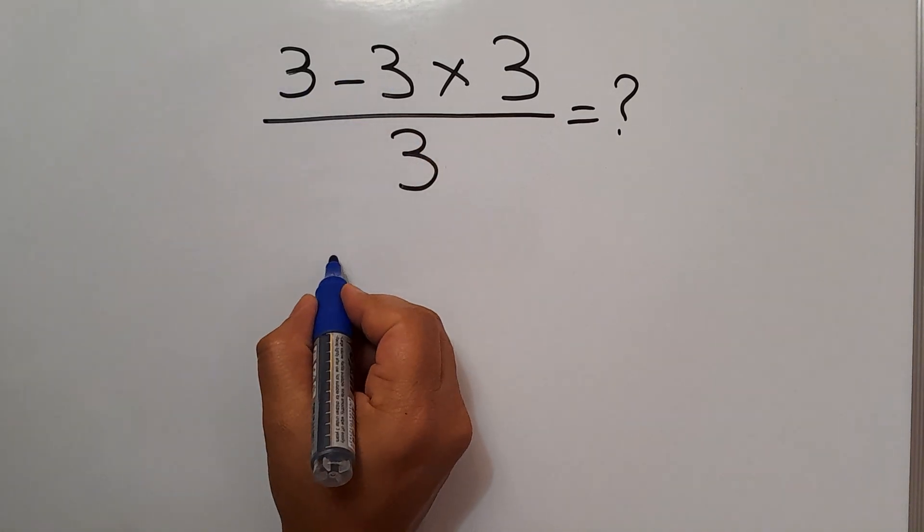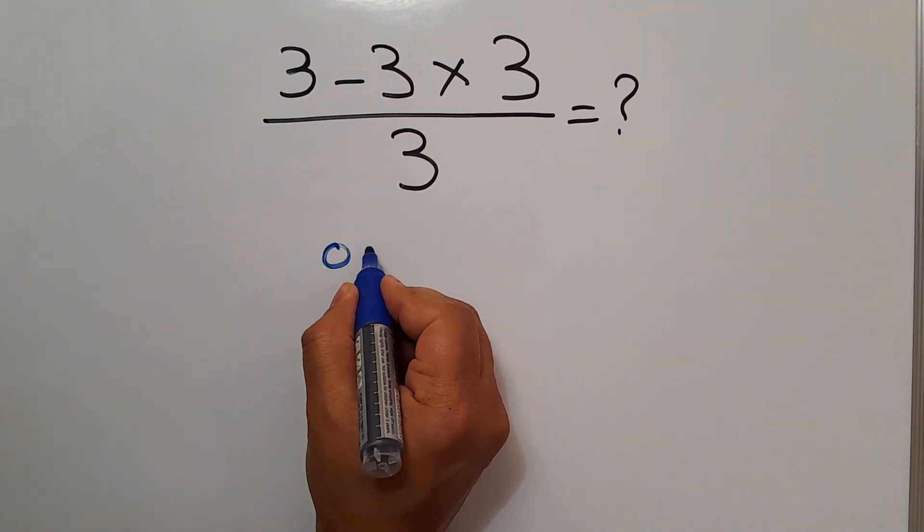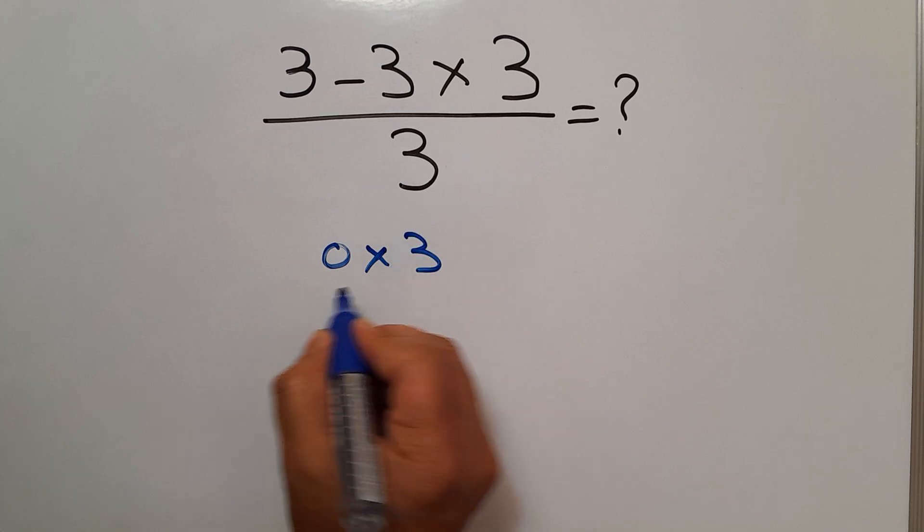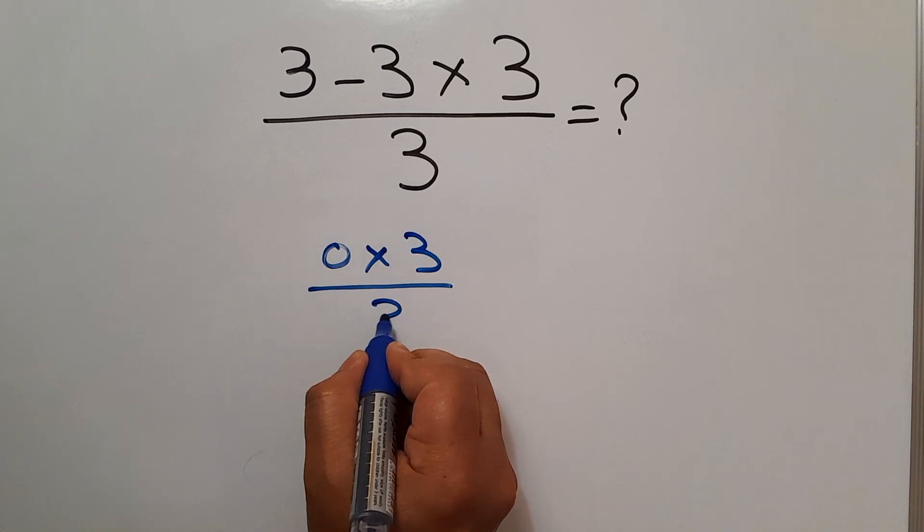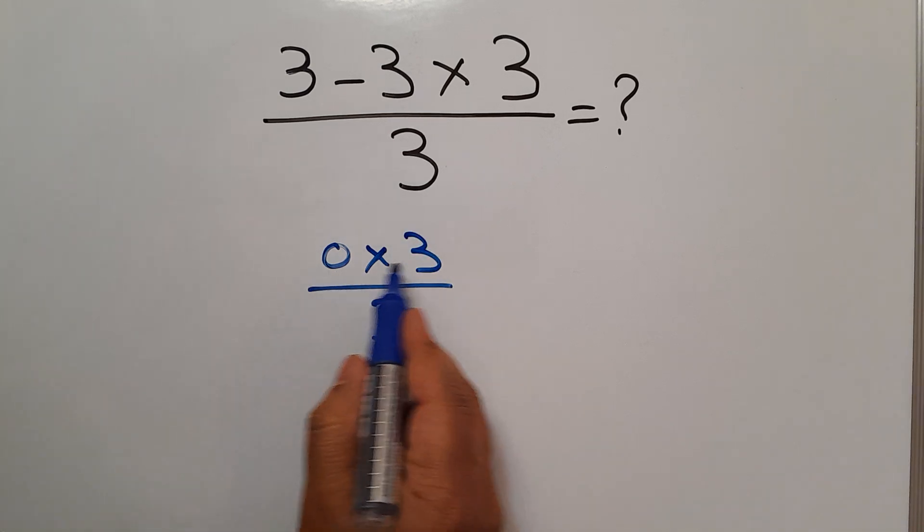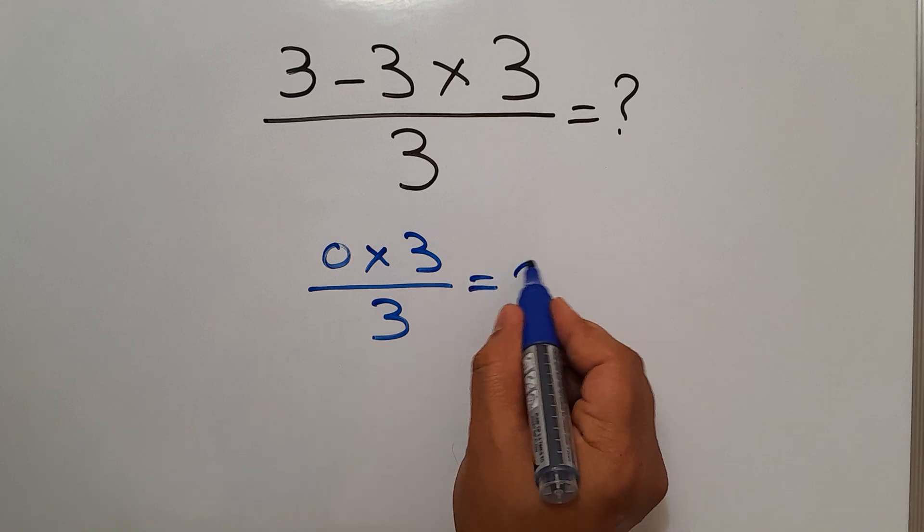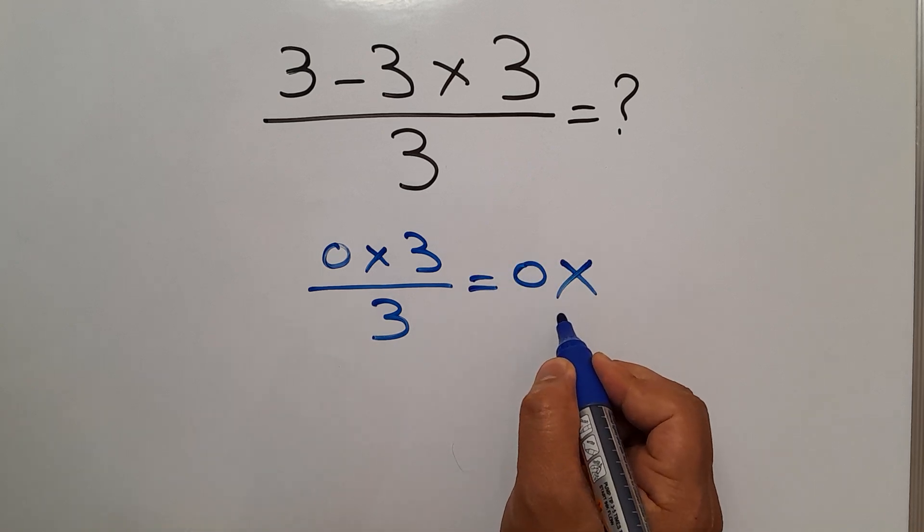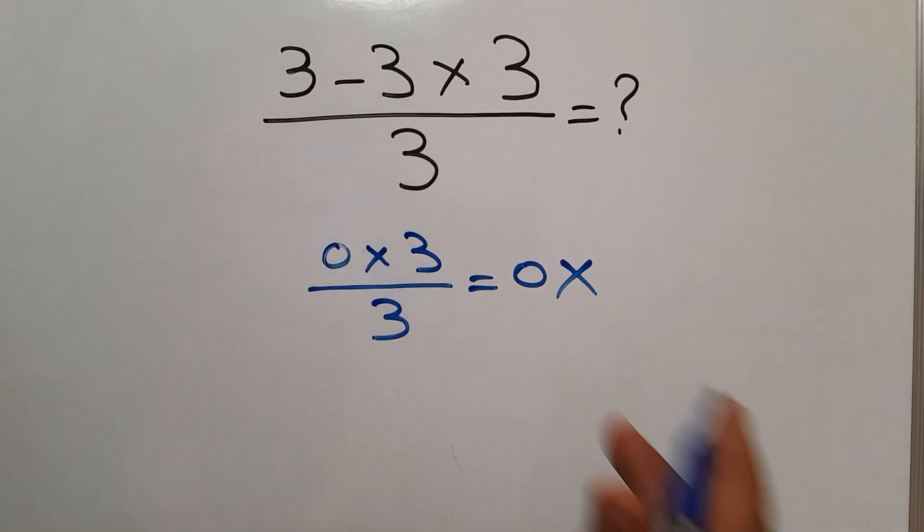3 minus 3 gives us 0, so 0 times 3, then divided by 3, and this is equal to 0. But 0 cannot be our answer.